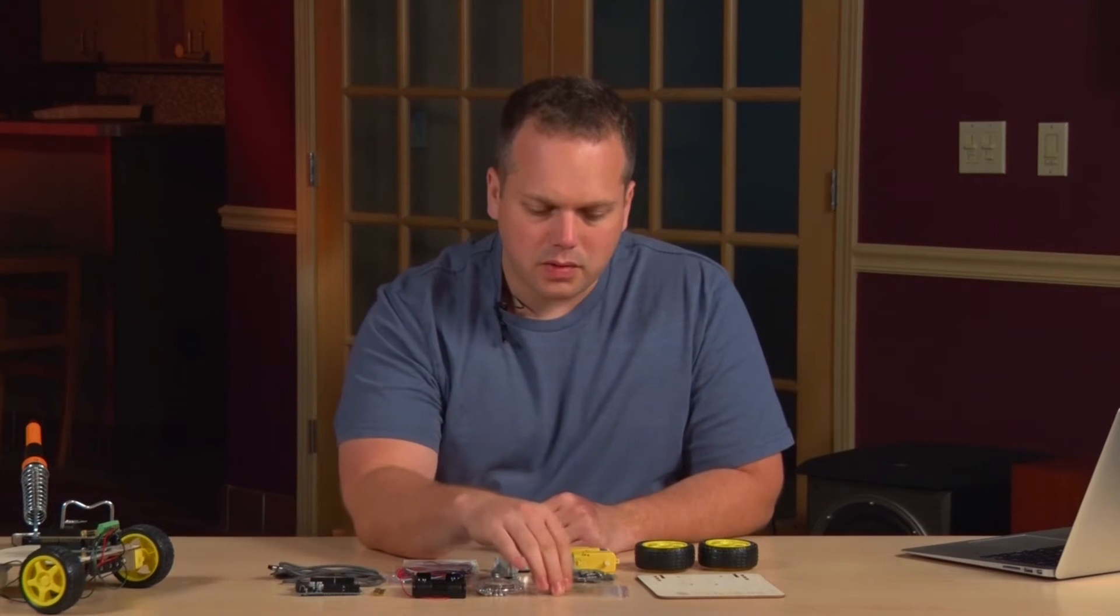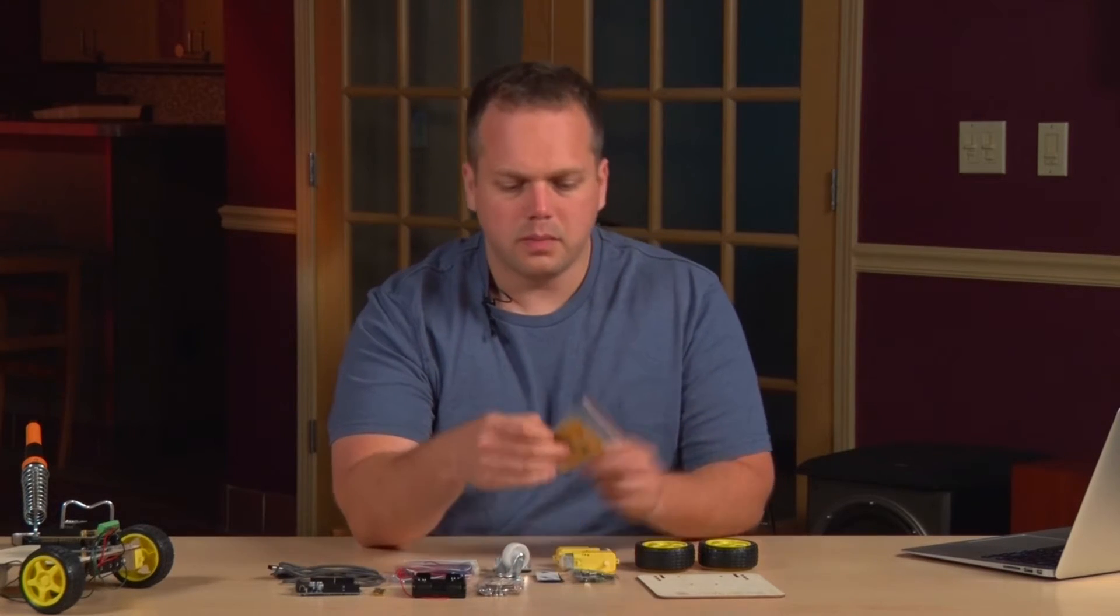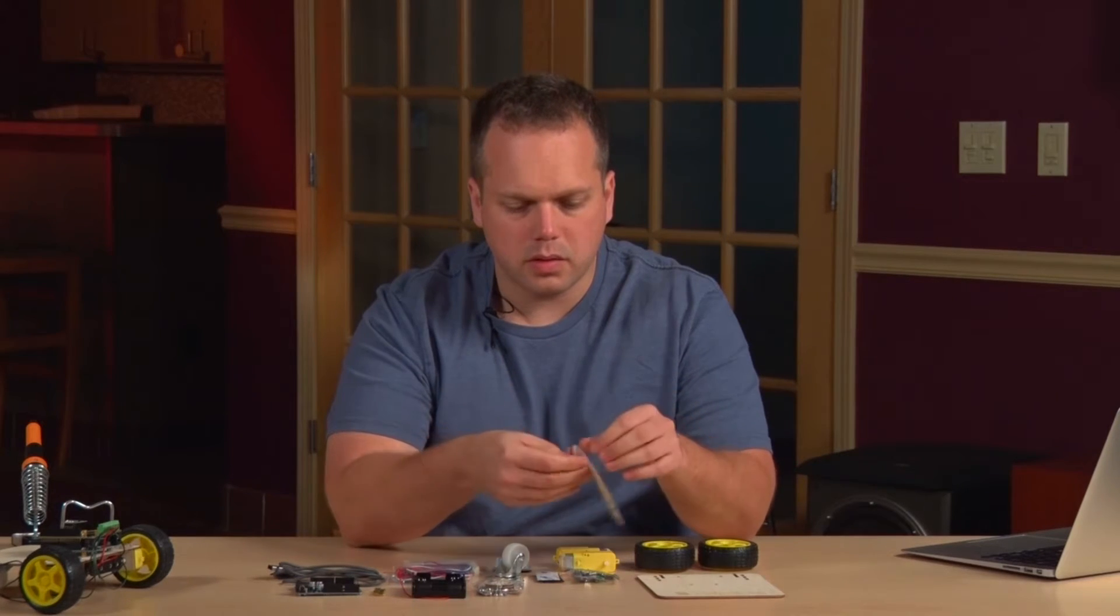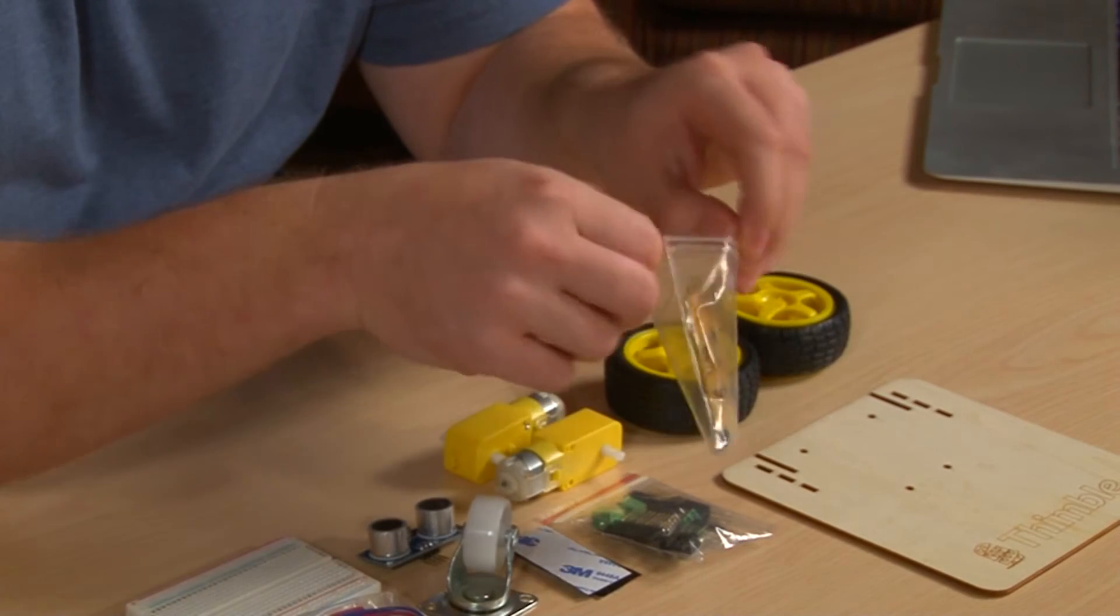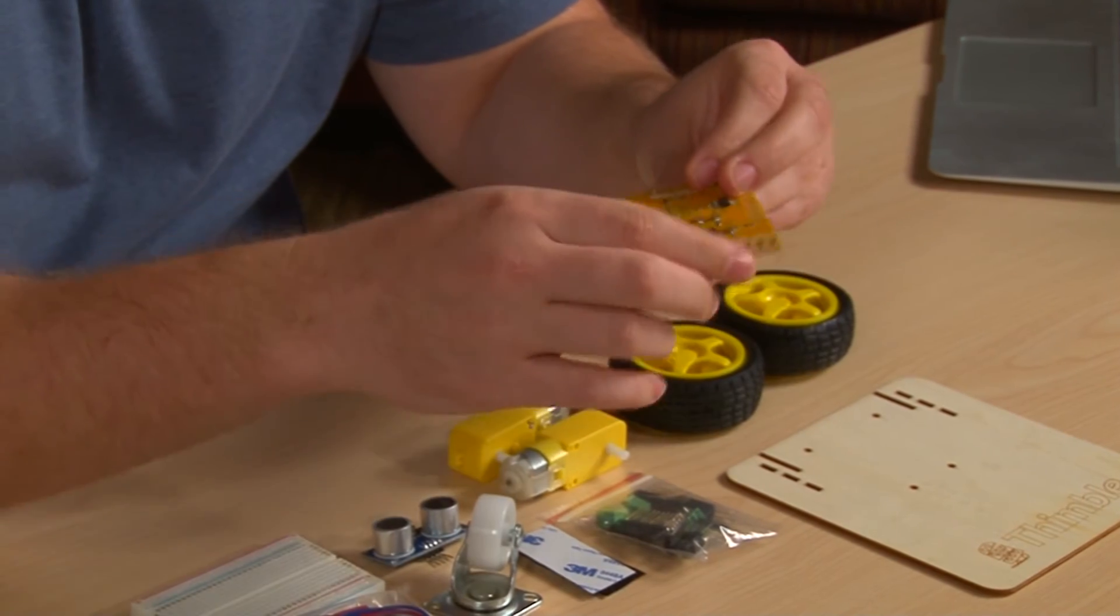So the first thing we're going to do is start with the circuit board itself, and we're going to start to populate all of the through-hole components on the circuit board.